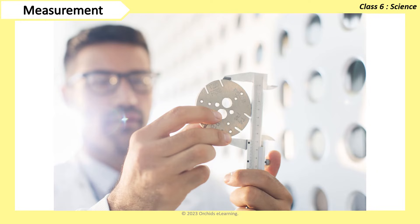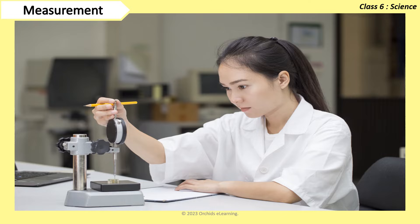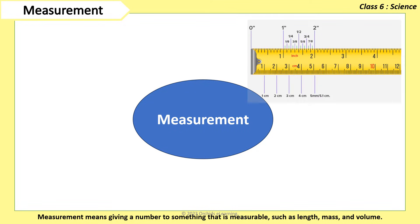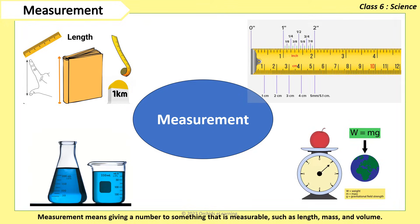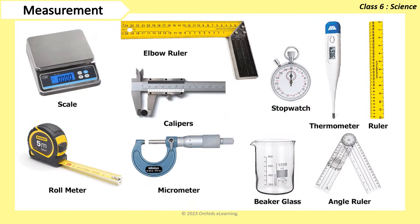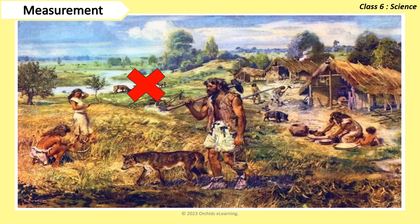One of the most important things that scientists do is to perform experiments. Experiments are done by making measurements. Measurement means giving a number to something that is measurable such as length, mass and volume. Measurement of most things is very simple today. We have many instruments and tools at our disposal. People in ancient times did not have those facilities.